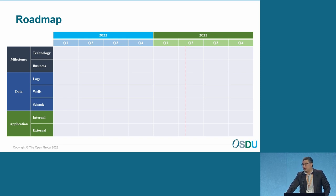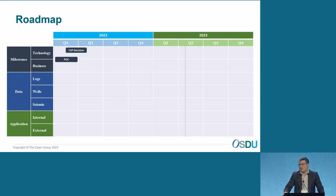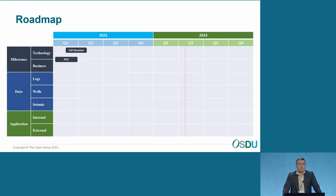Our roadmap started with a proof of concept in 2021 on AWS with Shell Brazil, testing data sharing. We then did a proof of concept on Azure and didn't see a significant difference between the two platforms — both were very good. We chose Azure because our corporate data platform was already there, so it made sense to be on the same platform.